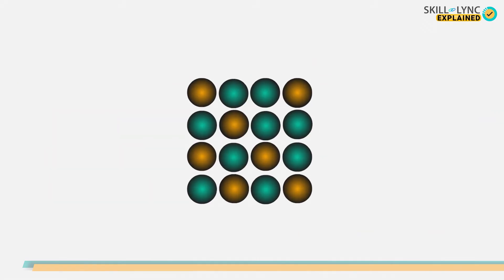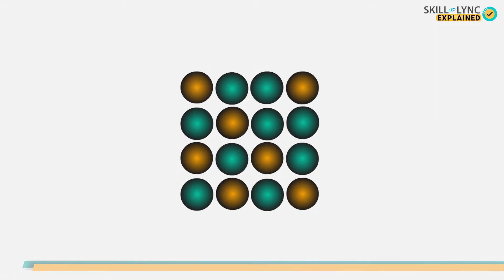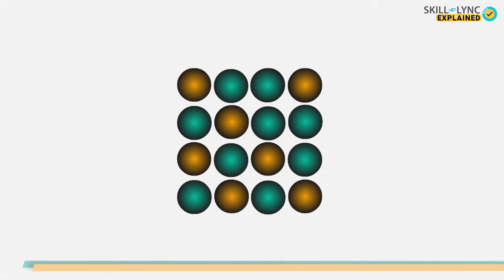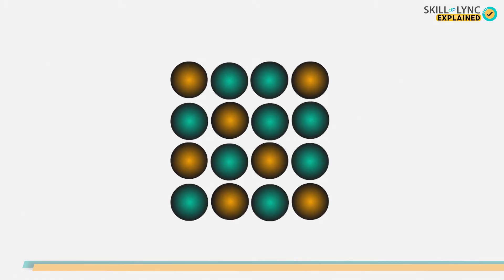If the solute atoms occupy random positions in the crystal lattice, then we call it a disordered solid solution. Most of the solid solutions are of this type. Well, that's all about the types.